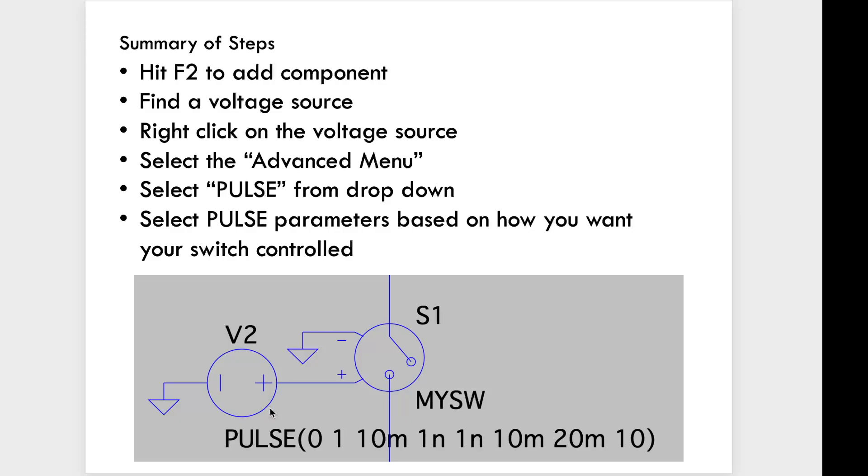All right, so here's a summary of the steps for adding this particular voltage-controlled source, or the voltage source, which controls the voltage-controlled switch. You're going to hit F2 to add a component. Search for the voltage source. This is your normal DC voltage source that we've been using previously in the class. You're going to right click on that voltage source. You're going to select advanced from that menu that pops up, and then there's a drop down at top. You select pulse from the drop down, and then you select the pulse parameters based on how you want the switch controlled.